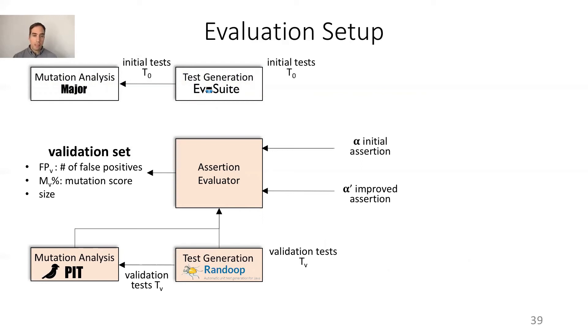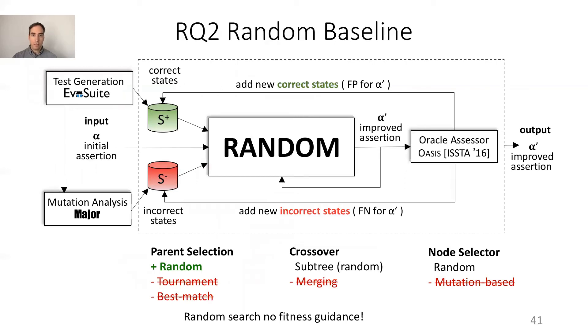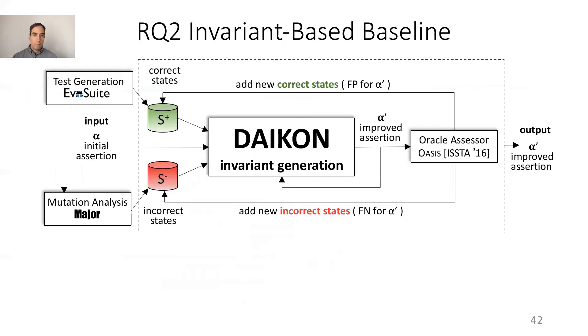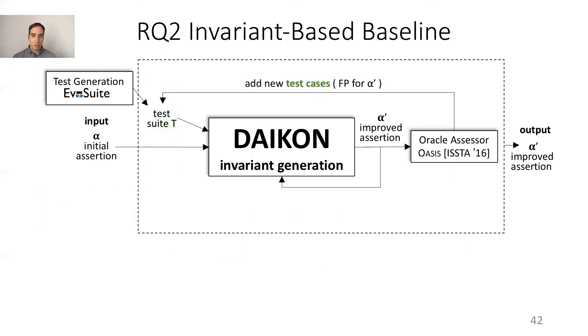Unfortunately Pit does not output the source code of the mutation, so we cannot count the number of false negatives, but we can give only the mutation score. Then we compare J-Assert with a random variant that explores the search space randomly, without any guidance by the fitness functions, and without any guidance about the number of false positives and false negatives. Then as an additional baseline, we consider an invariant-based approach to improve oracles based on the invariant generator Daikon. Daikon does not take as input incorrect states and does not aim to improve oracle assertions. However, we can use the feedback of Oasis to add new test cases to Daikon so that Daikon can try to generate a new invariant with this larger set of test cases.